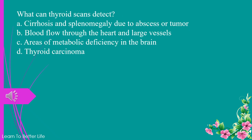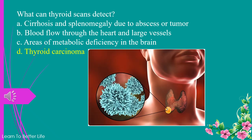What can thyroid scans detect? a. cirrhosis and splenomegaly due to abscess or tumor. b. blood flow through the heart and large vessels. c. areas of metabolic deficiency in the brain. d. thyroid carcinoma. The answer is d. thyroid carcinoma.